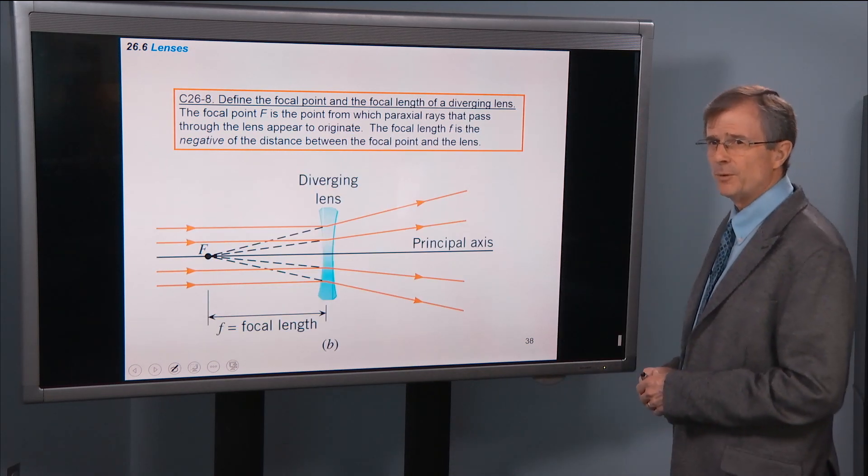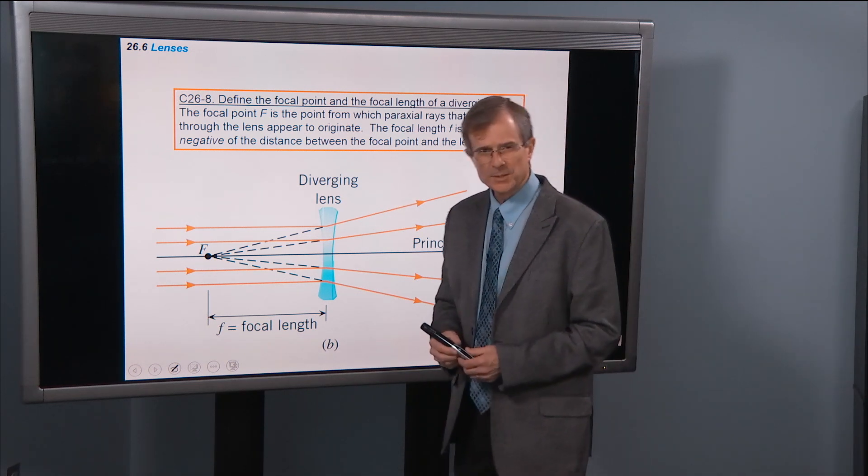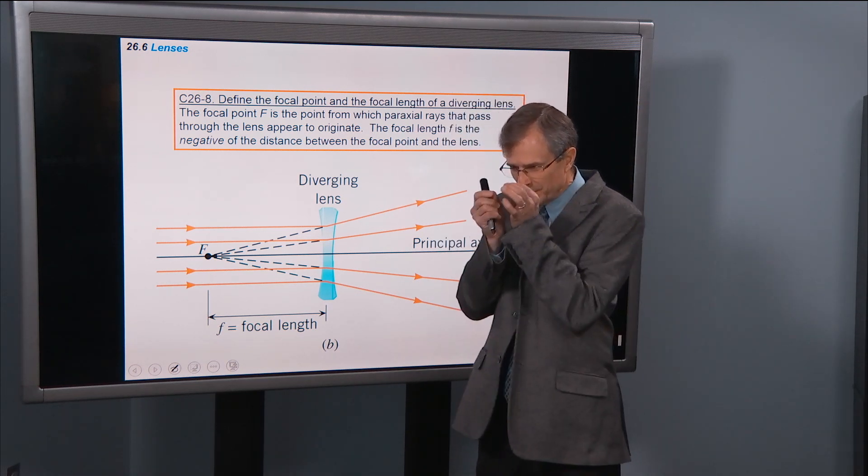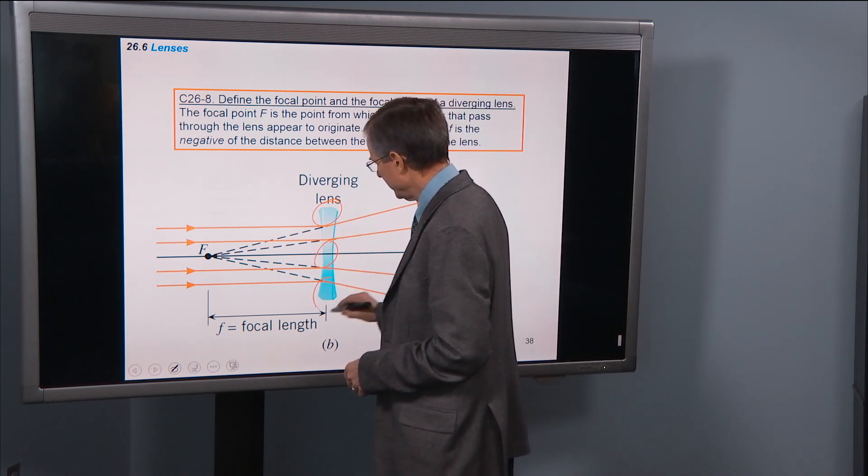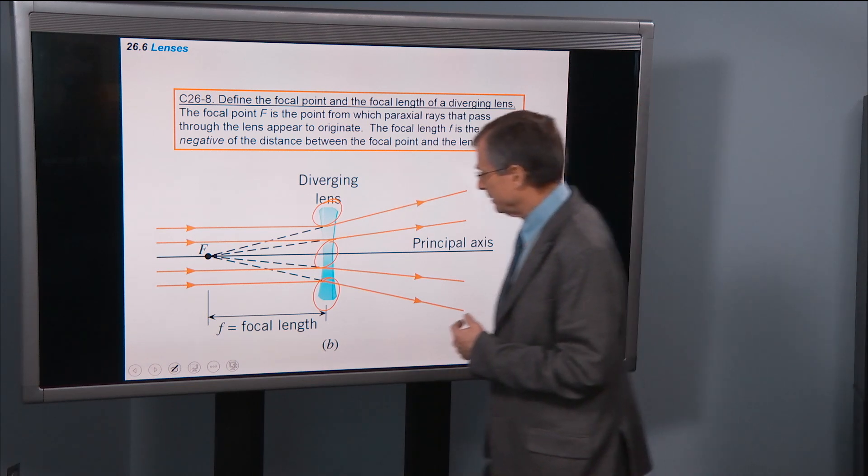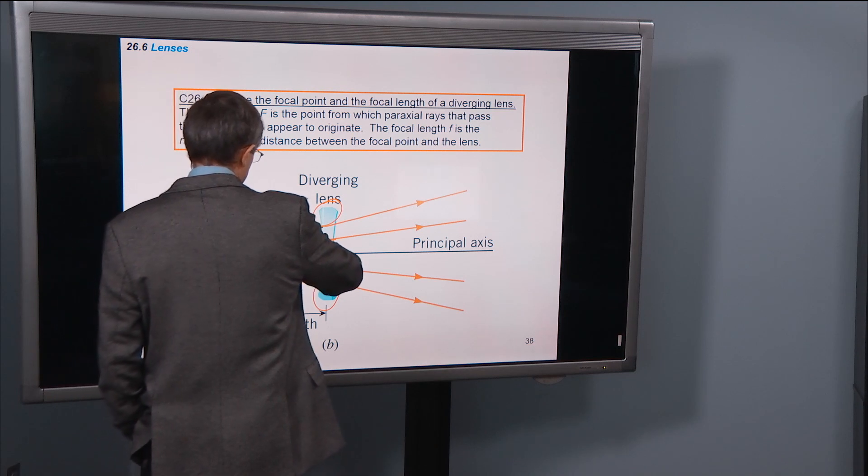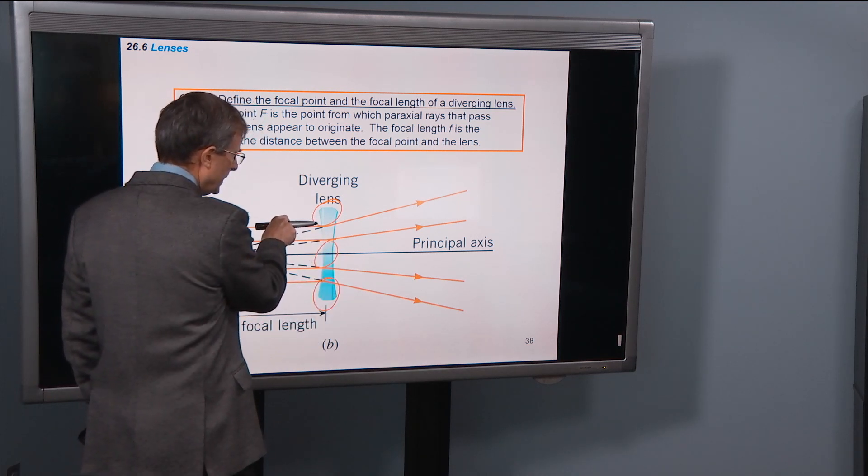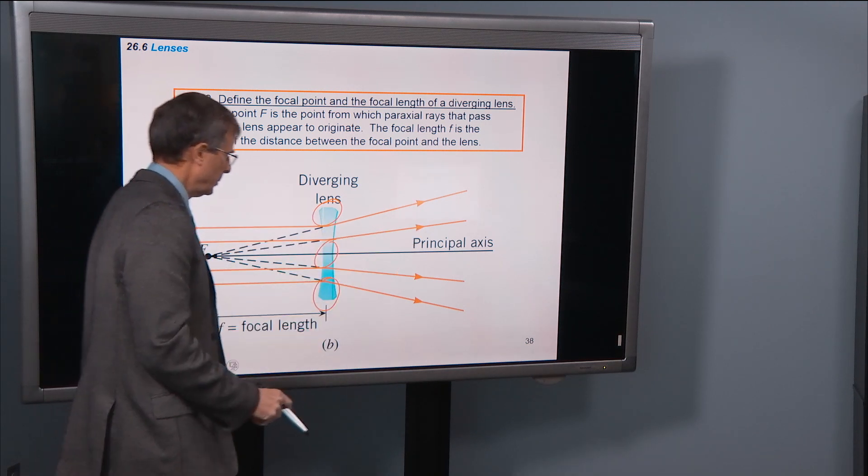Define the focal point and the focal length of a diverging lens. Some of you have glasses that look like this, that are thinner in the middle and thicker near the outside, or contacts. Here's the idea. We've got paraxial rays coming in, they get refracted away from the principal axis.